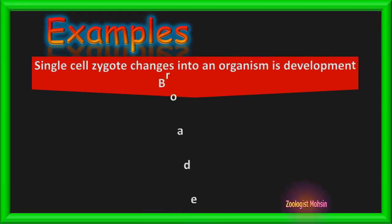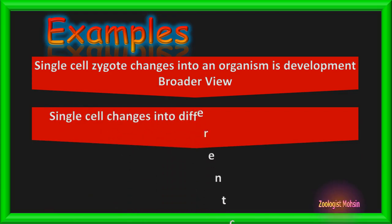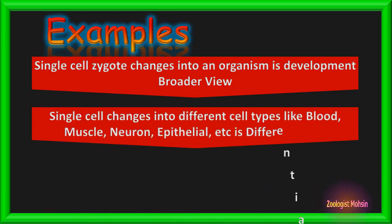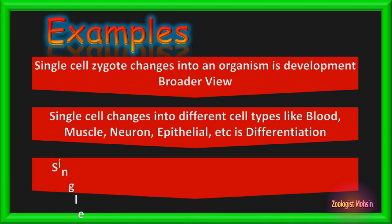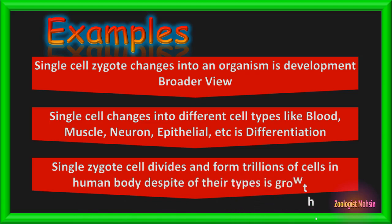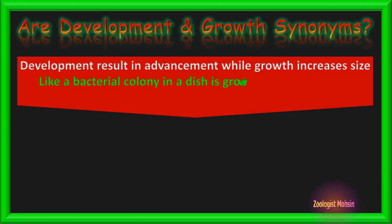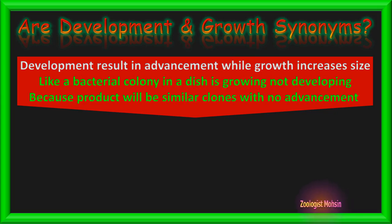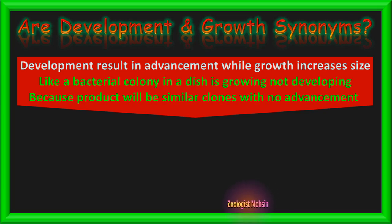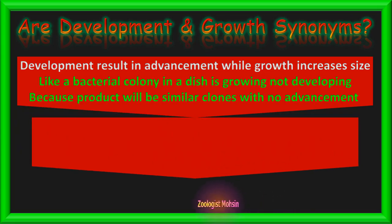To summarize: a single zygote changing into an organism is development in a broader view. A single cell changing into different cell types — blood, muscle, neuron, epithelial — is differentiation. And a single zygote dividing to form trillions of cells regardless of their type is growth. Development results in advancement while growth increases size. For example, a bacterial colony is growing, not developing, because the products are similar clones with no advancement, just higher in number.